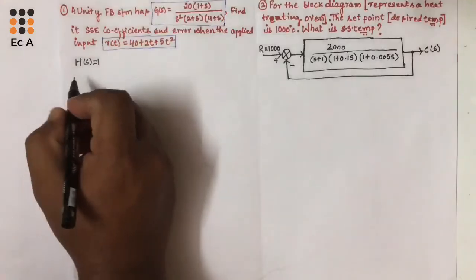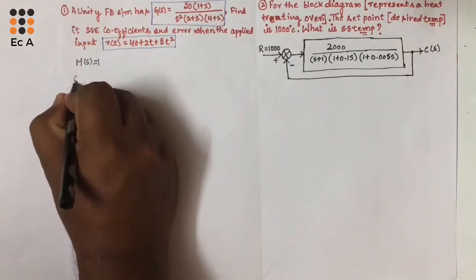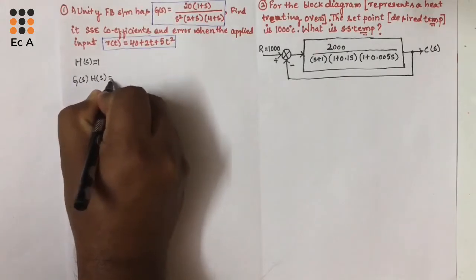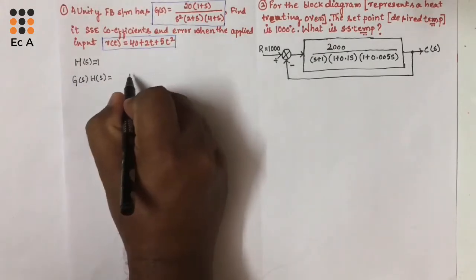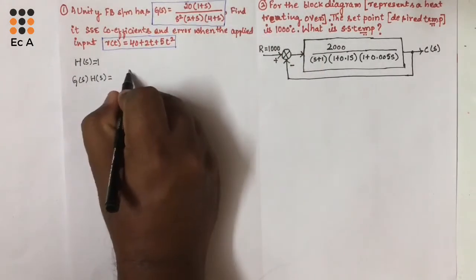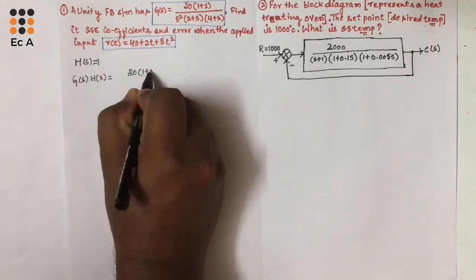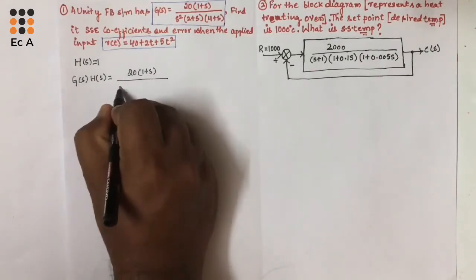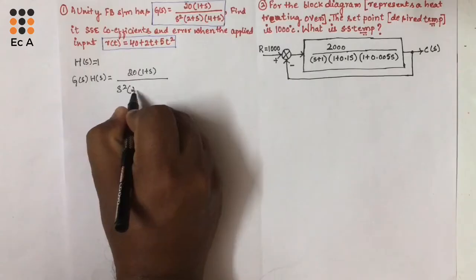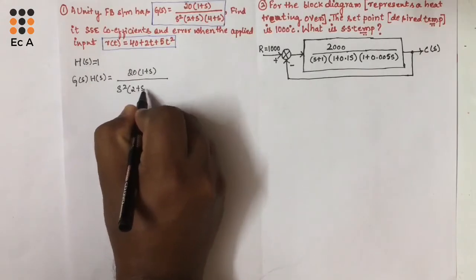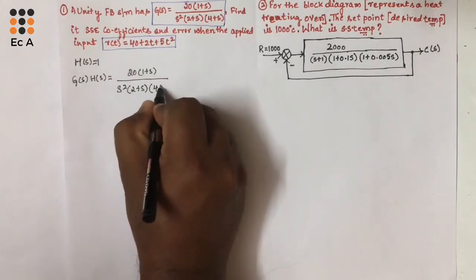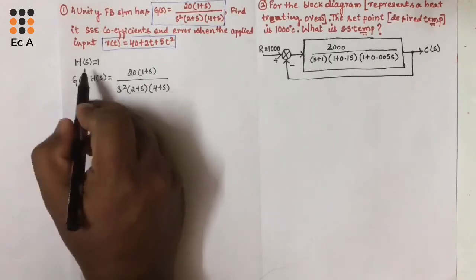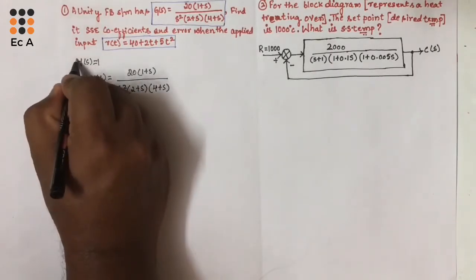First, we need to write the open loop transfer function, which is G(S) into H(S). This will be equal to G(S), which is 20 times (1 plus S) divided by S squared times (2 plus S) times (4 plus S), multiplied by H(S) which equals 1.